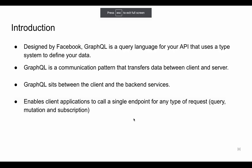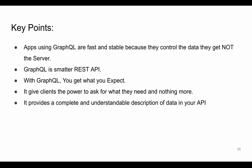GraphQL has many new features — it enables a client to call only a single endpoint for many requests. We don't need to write a large number of endpoints like in REST API; we just need a single endpoint at slash graphql. Applications using GraphQL are fast and stable because they control the data, not the server. GraphQL is smarter than REST API — the client decides what data is needed, so you get exactly what you request and nothing more, avoiding over-fetching and under-fetching.